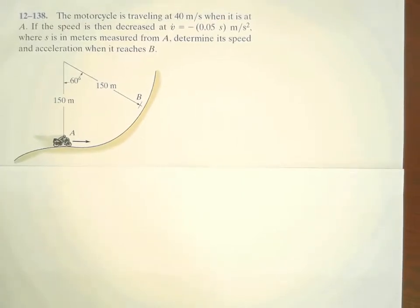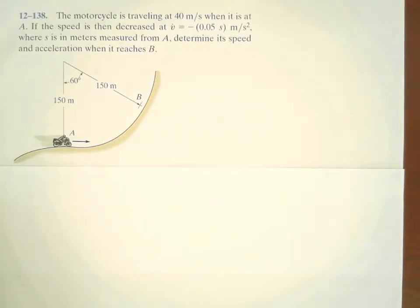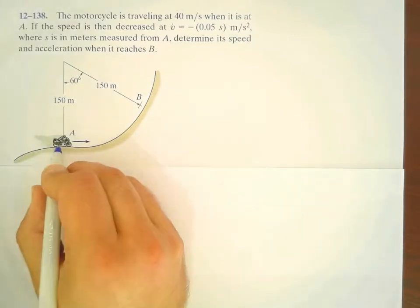The tangential component of the acceleration here was given as a function of S. And it is required in this question to determine the speed and acceleration when the motorcycle reaches point B.